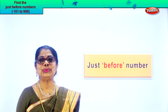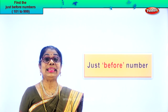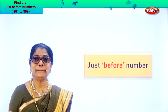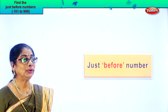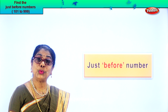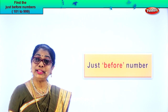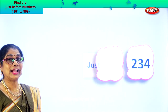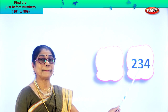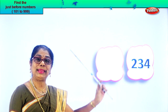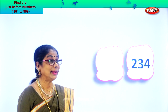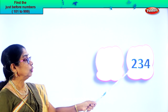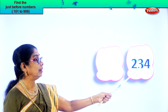Hi children, let's do another interesting exercise — just before numbers. You have learned all the numbers, so you will be able to say what number comes before. Look what you have here. Let's take our first exercise. This place is empty — you are going to find the number before. Three digit number: 234.